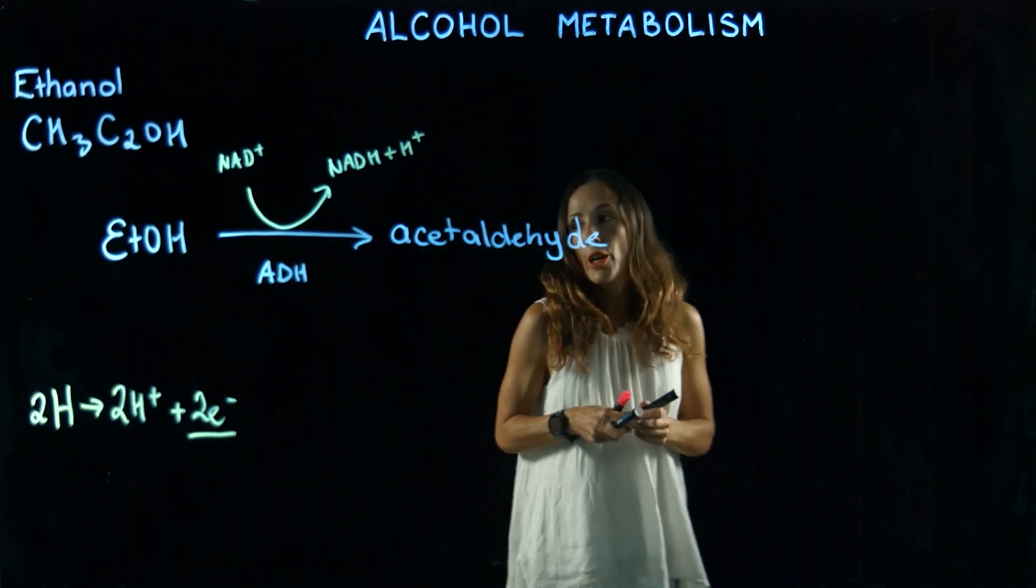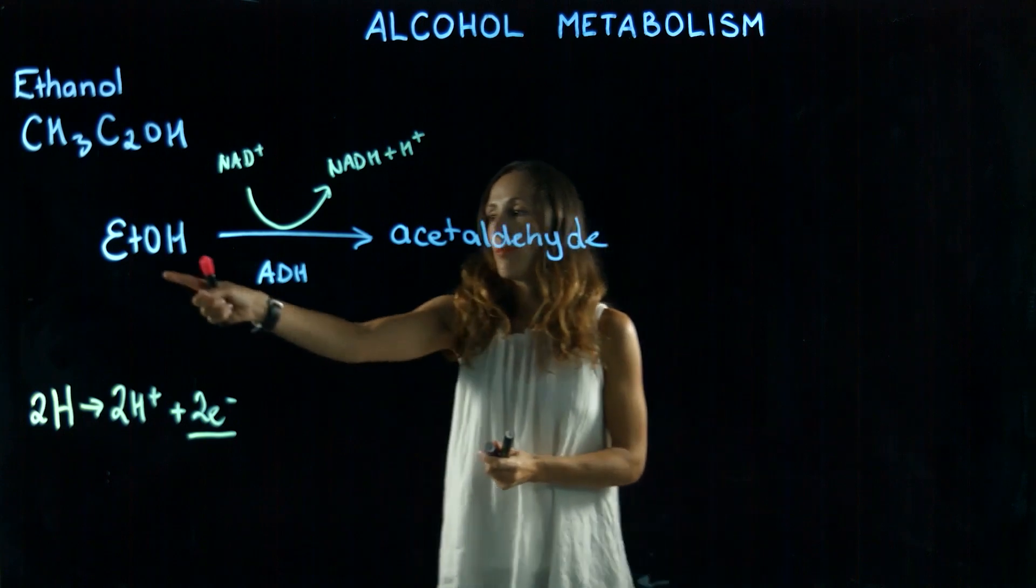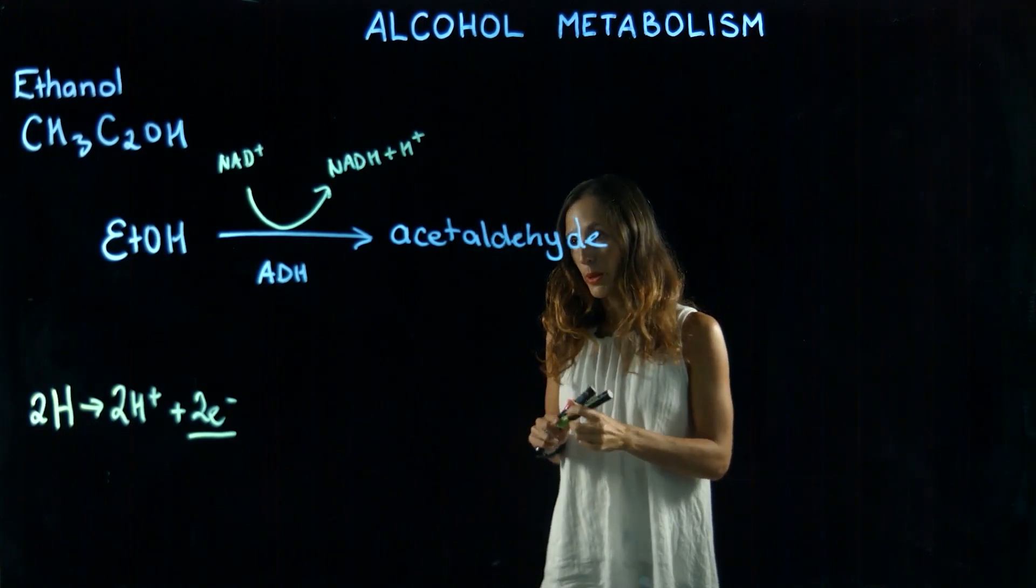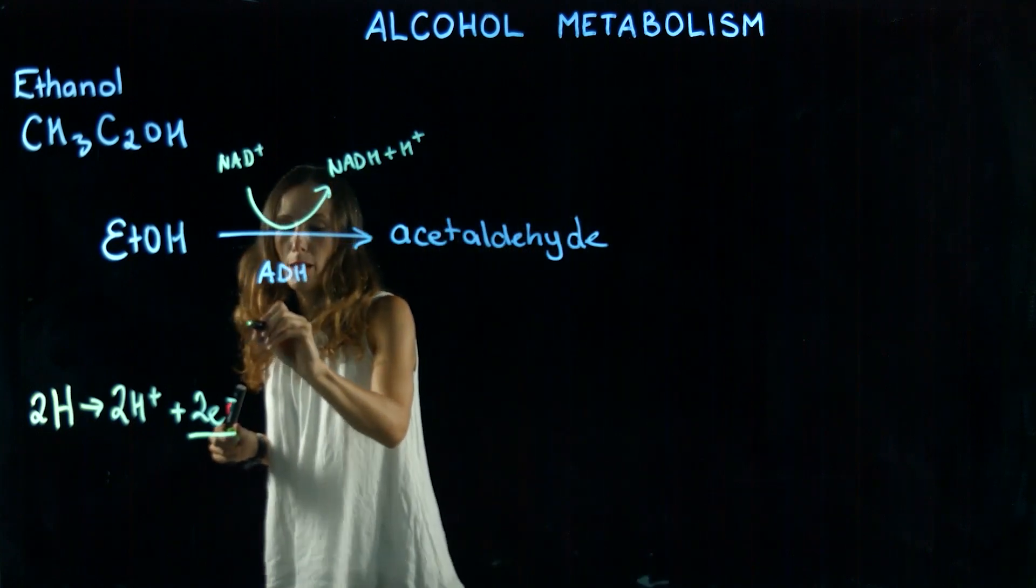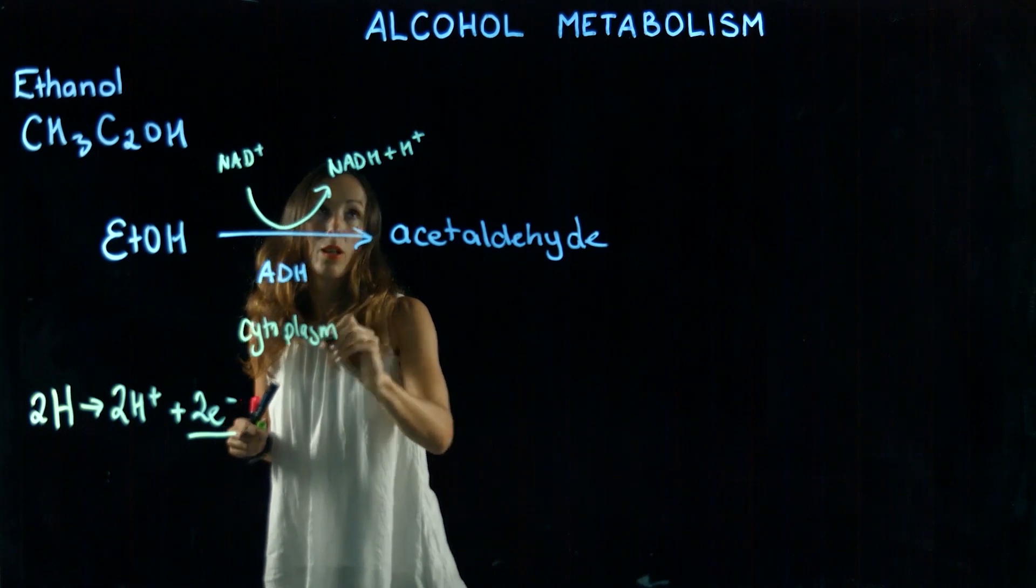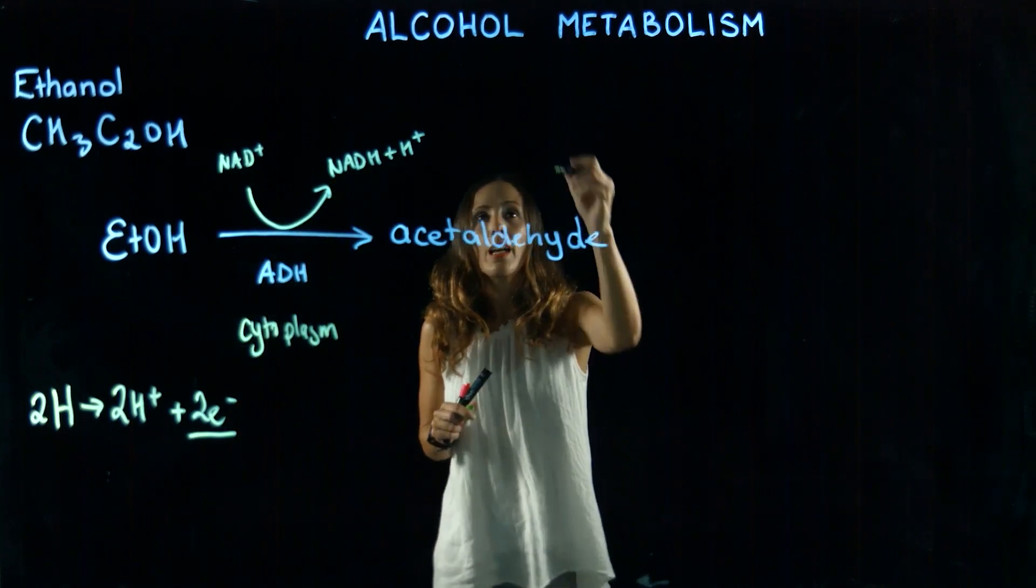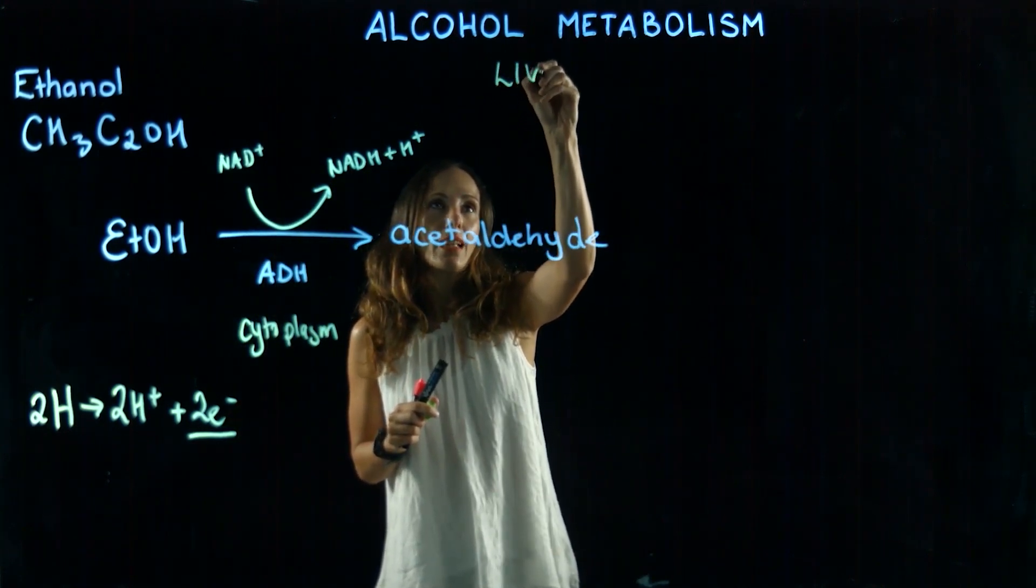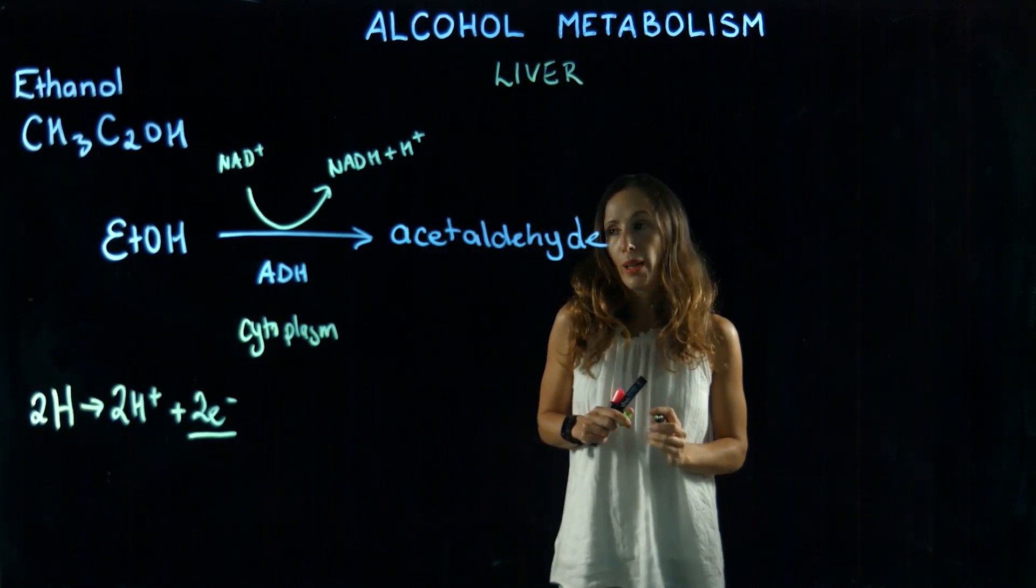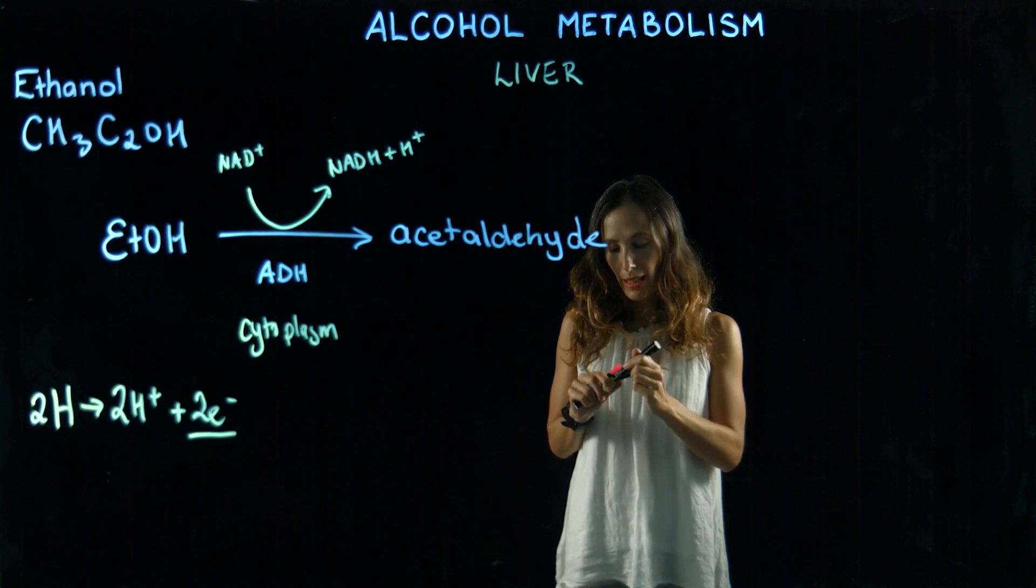That's our first step of oxidizing ethanol, and this occurs in the cytoplasm. Which cells does it occur in? Predominantly in liver cells, so the metabolism of our alcohol is occurring in the cytoplasm of liver cells.